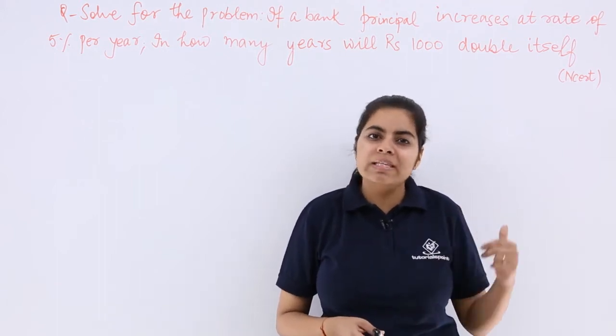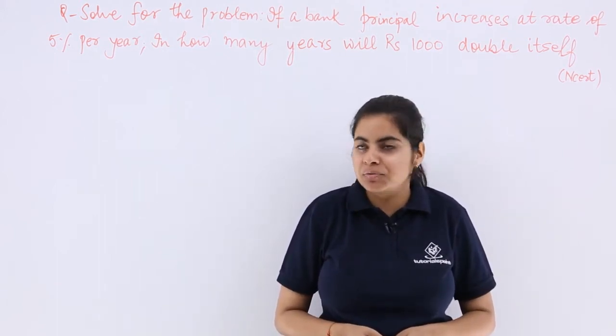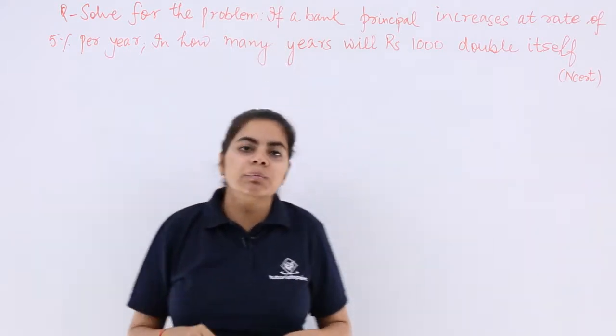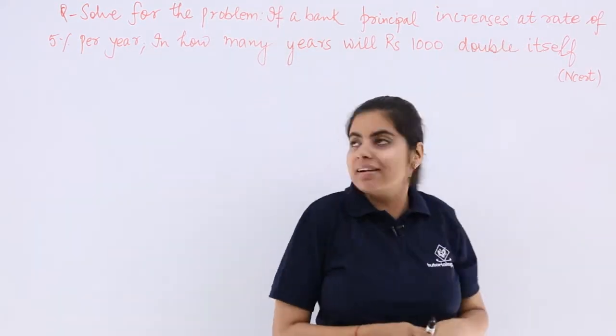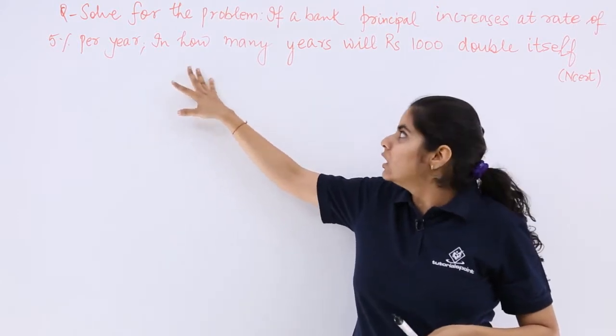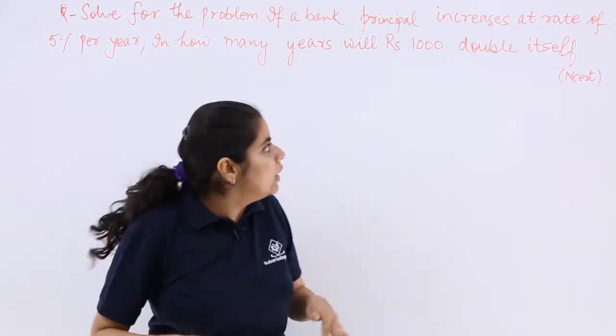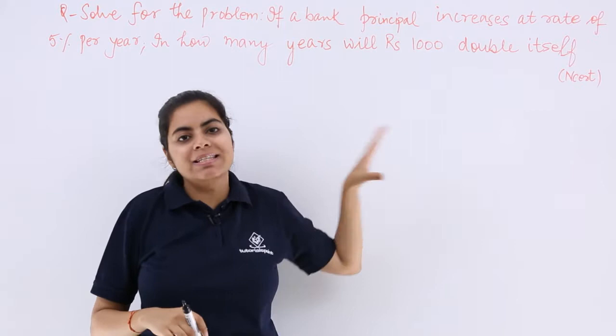An important problem from NCERT books is written in front of you. It says solve for the problem: If a bank principal increases at the rate of 5% per year, in how many years will Rs. 1000 double itself?